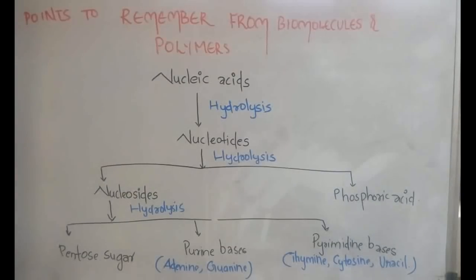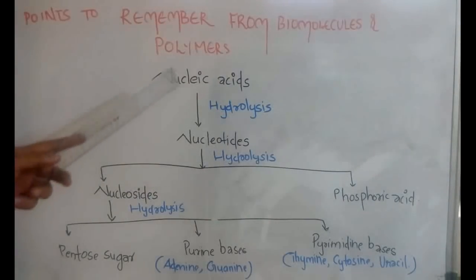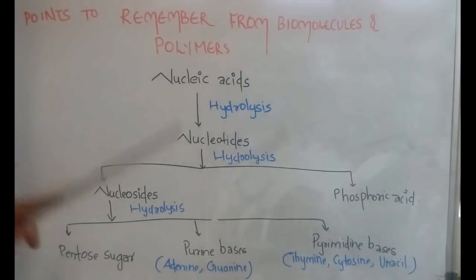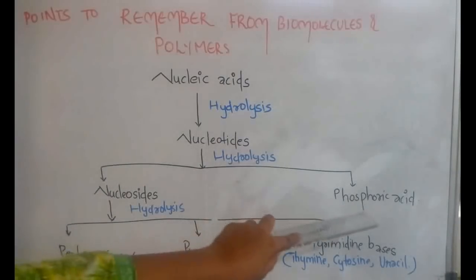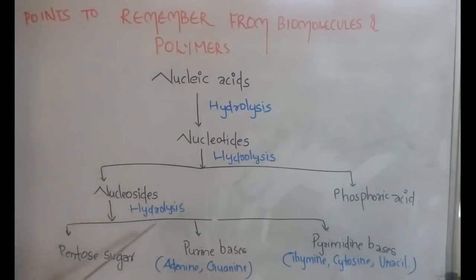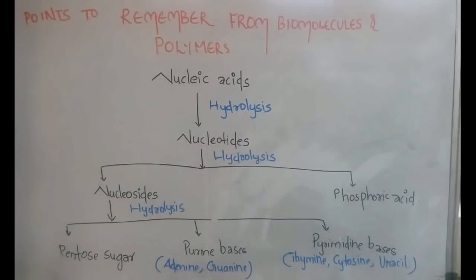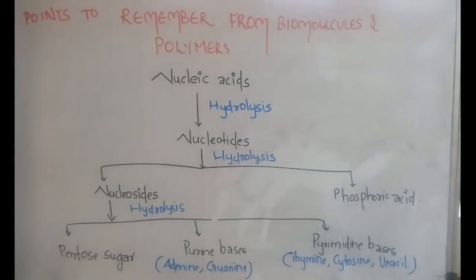What I have written on the board is the breakdown of nucleic acid. Nucleic acid, when it undergoes hydrolysis, forms nucleotides. On further hydrolysis of nucleotides, we get nucleosides and phosphoric acid. Nucleosides on further hydrolysis give us pentose sugar, purine bases, and pyrimidine bases. The purine bases are adenine and guanine, and the pyrimidine bases are thymine, cytosine, and uracil.